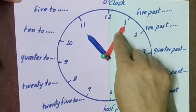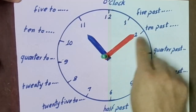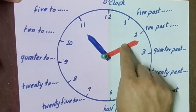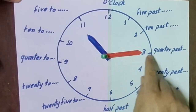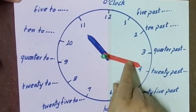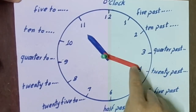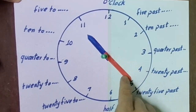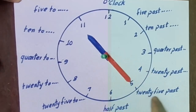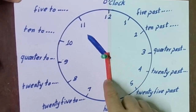So when the long hand is on 1, we say 'five past'; on 2, 'ten past'; on 3, 'quarter past'; on 4, 'twenty past'; on 5, 'twenty-five past'; and on 6, 'half past.'